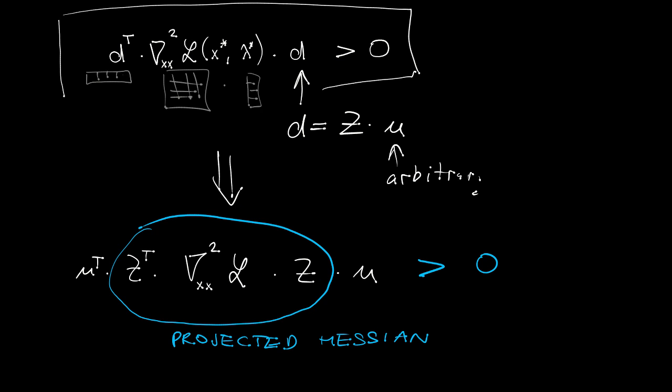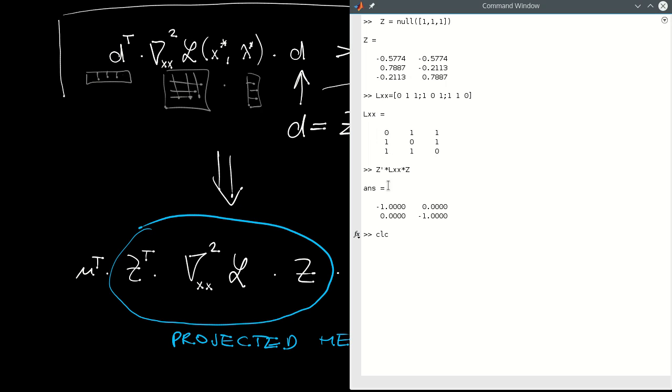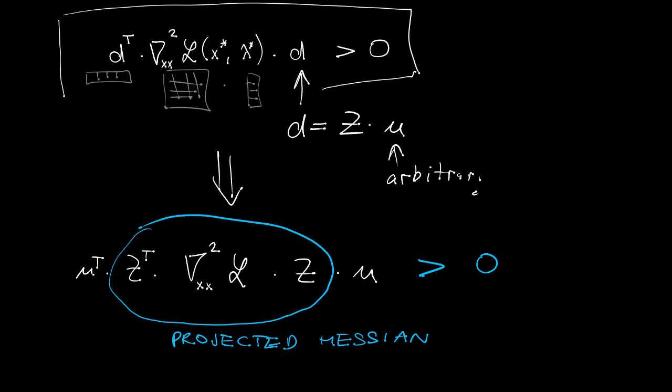Back to MATLAB. Here you can see that I formed the projected Hessian in the just described way, and this is the resulting Hessian matrix. Without computing the eigenvalues, I can immediately conclude that the eigenvalues are both negative. Hence, the optimization problem has a local maximum at the critical point. And that concludes our discussion of sufficient conditions of optimality for constraint problems.